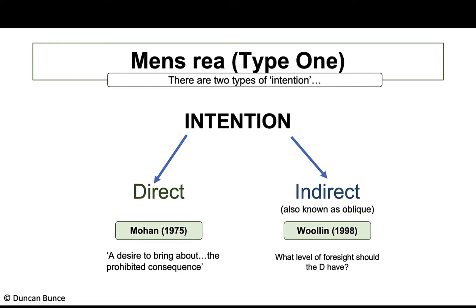So what level of foresight should the defendant have? If the defendant claims they didn't desire the outcome, the law has developed a test of foresight of consequences. If the defendant can foresee the consequence of that outcome, it may be possible for mens rea to be found — by the jury, if it's a murder case in the Crown Court.